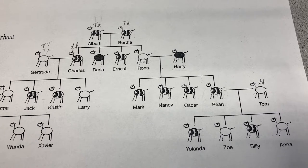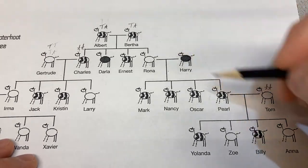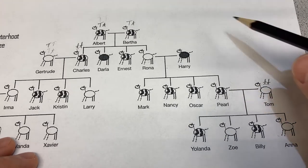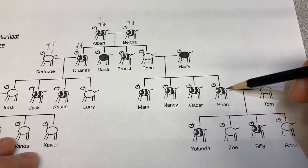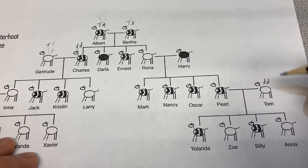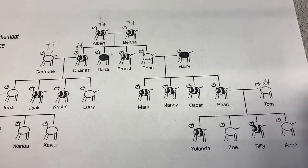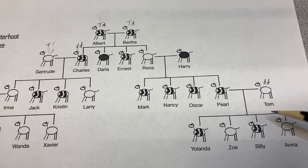Having a tail is simple dominance. Tail is dominant — big T. No tail is recessive — that's simple Mendelian genetics. There are two phenotypes for tail: tail and no tail.